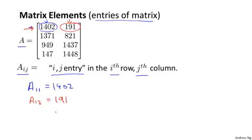Just a couple more quick examples. A32 refers to the entry in the third row and the second column, because that's 3, 2. So that's equal to 1437.